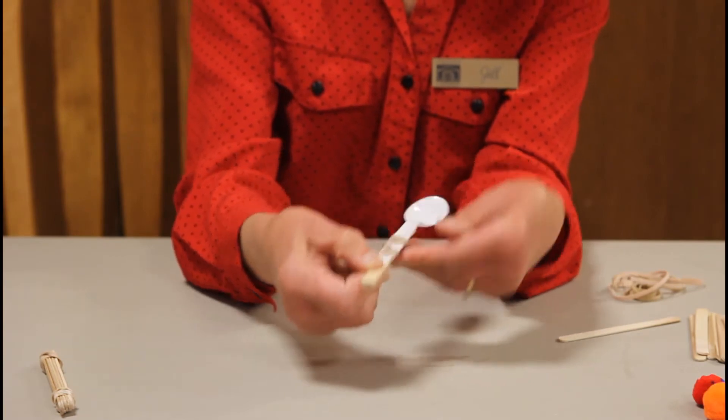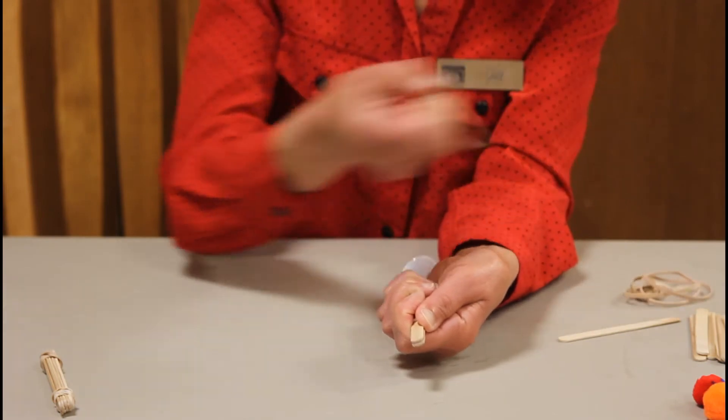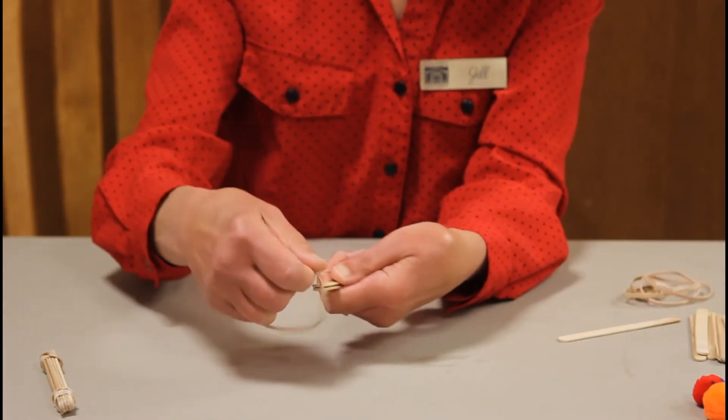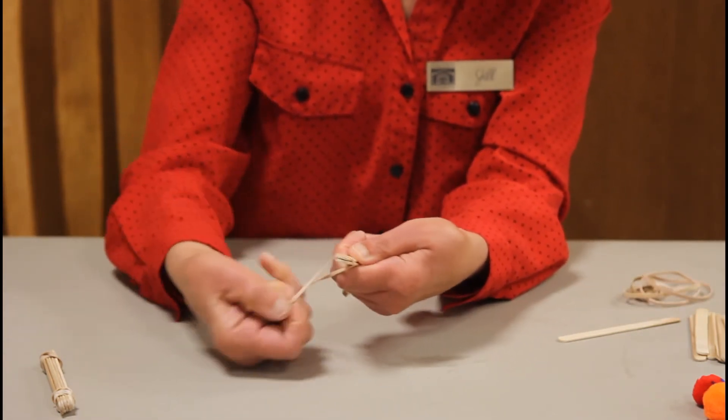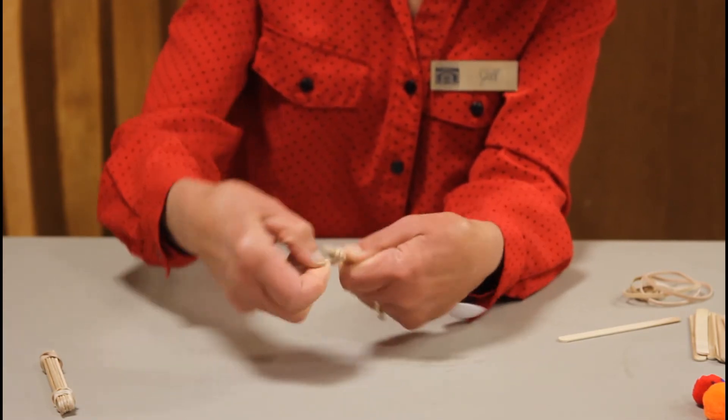And we want those two popsicle sticks to stay together. So we're going to take another rubber band. Okay, this is rubber band number four. And I am going to put that together just like this.